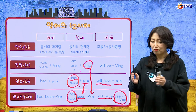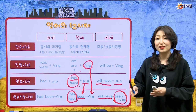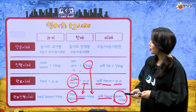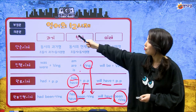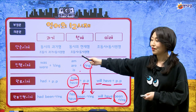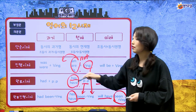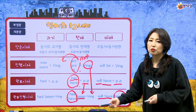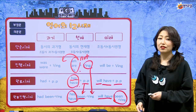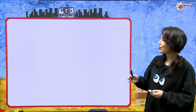영어가 참 재밌는 게, 뜻을 몰라도 문장의 구조나 동사가 어떤 형식으로 쓰여져 있는지만 봐도 이것이 과거인지, 미래인지, 완료인지, 진행 시제인지를 다 알 수가 있어요. 부정문과 의문문도 만들 줄 알죠? 단순 시제는 조동사에 not 붙이기, 진행 시제는 be동사에 not, 완료 시제는 have/has에 not 붙이면 부정문이고, 해당 조동사·be동사·have를 주어 앞으로 내보내면 의문문이에요.